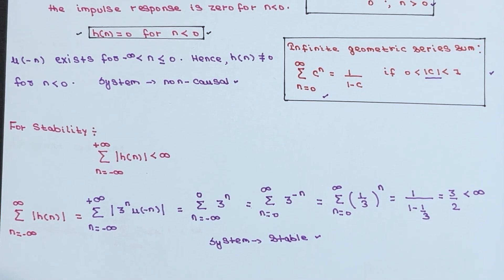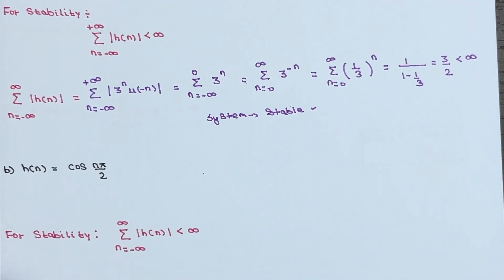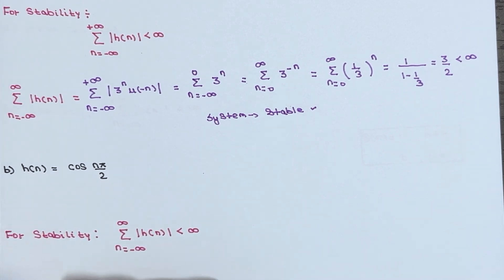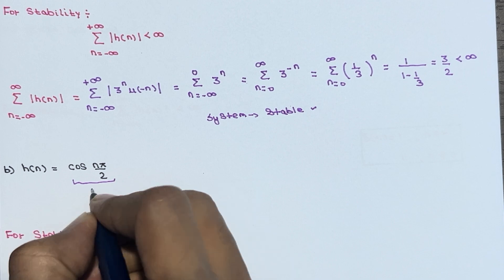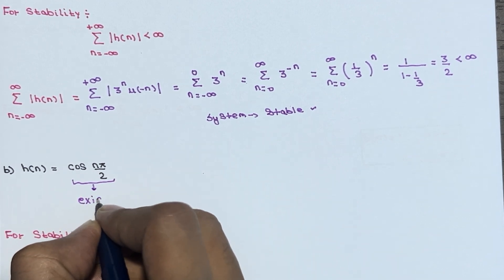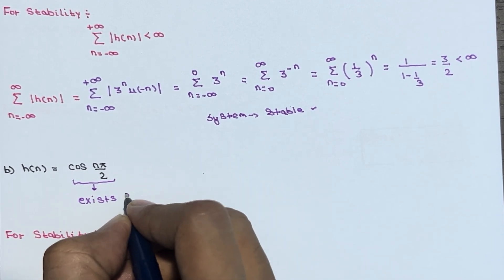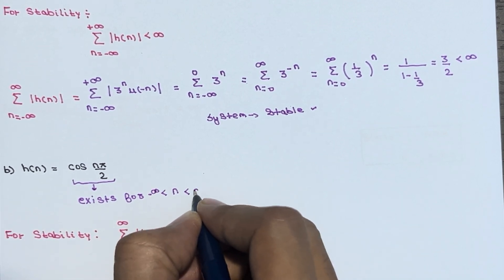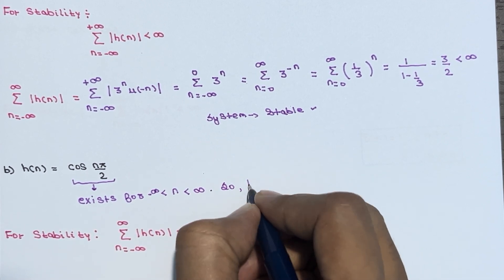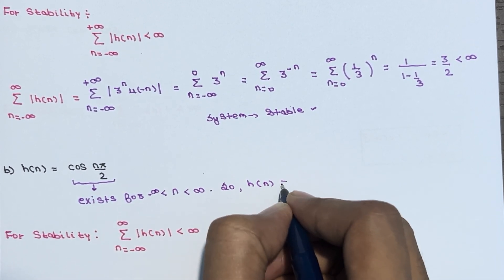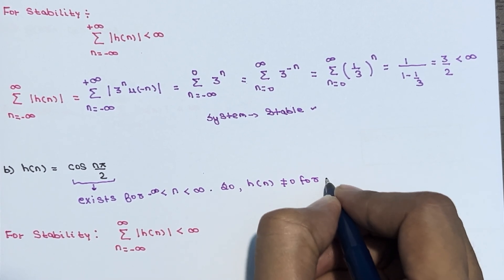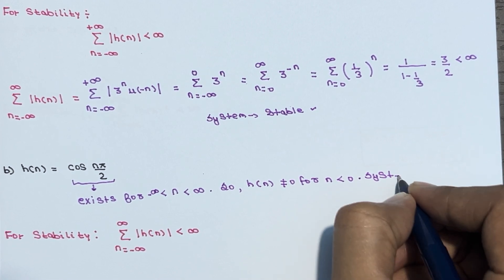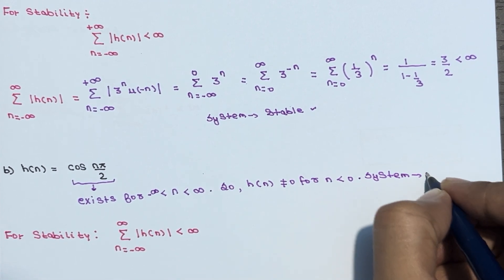Now let's move to the next example where h(n) = cos(nπ/2). If you see the behavior of cos(nπ/2), it exists for n from negative infinity to positive infinity. In this case, h(n) is not equal to 0 for n less than 0, so the system is non-causal.